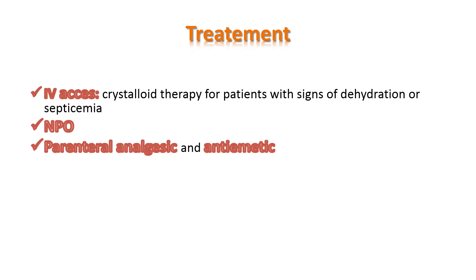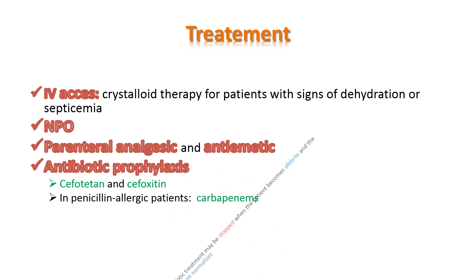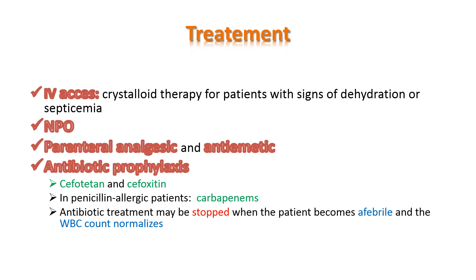For patients' comfort, parenteral analgesic and antiemetic will be given. Antibiotic prophylaxis should be administered before every appendectomy. Cefazolin and cefoxitin seem to be the best choices of antibiotics. In penicillin-allergic patients, carbapenems are a good option. Antibiotic treatment may be stopped when the patient becomes afebrile and the white blood cell count normalizes.